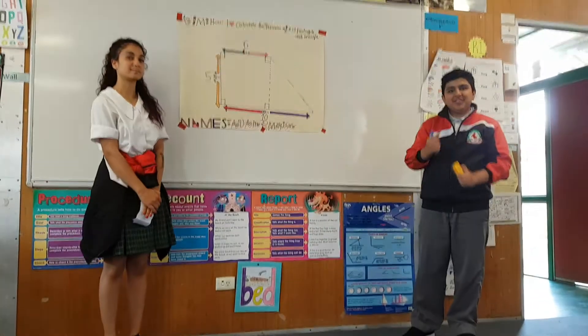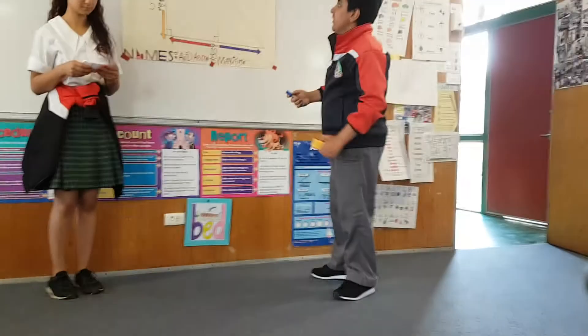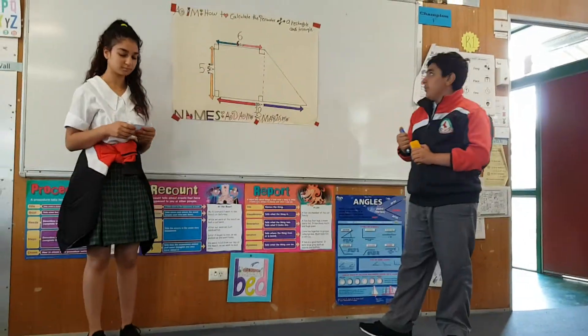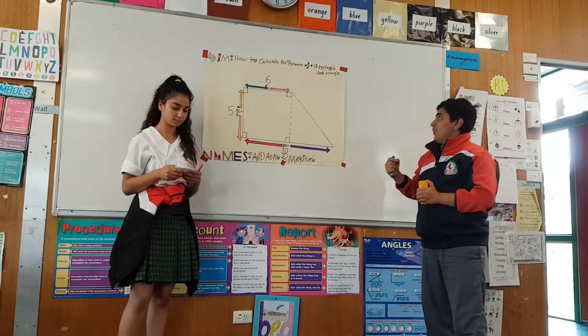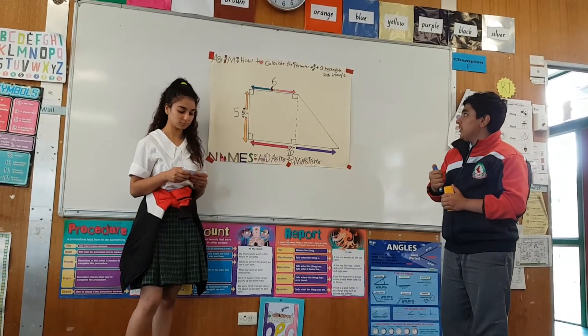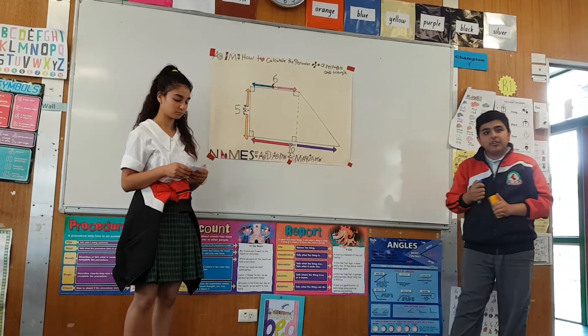Today I will talk about the perimeter — how to calculate the perimeter with a triangle on the table.